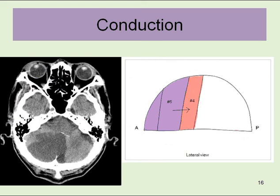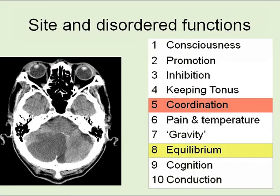After looking up all 10 functions, we found that the lesion of the right neocerebellum and bilateral paleocerebellum causes disorder of coordination on the right and equilibrium on both sides of the body.